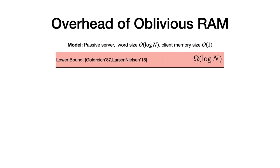Some words on our model. We assume that the server is passive — it behaves just like a memory and is not allowed to perform any computation. We assume that the word size of the RAM machine is log n, since otherwise the client cannot describe an address in the memory using a constant number of words. Moreover, we assume that the client memory size is constant. In these settings, the lower bound is Ω(log n), and we have a 30-year-long line of research trying to match this lower bound.